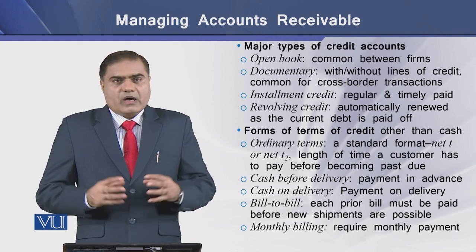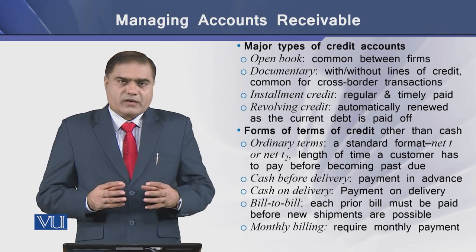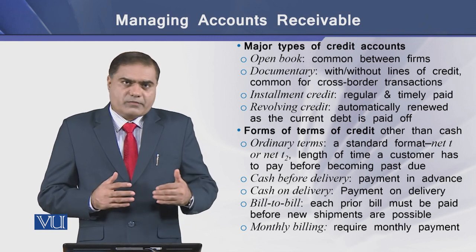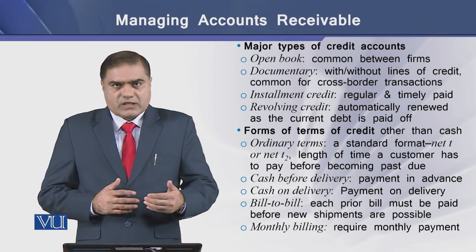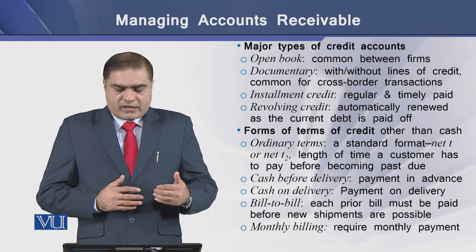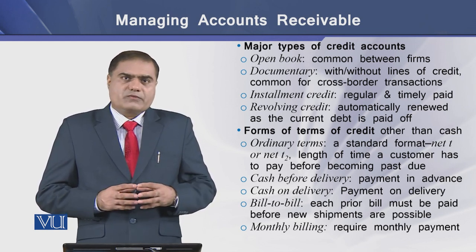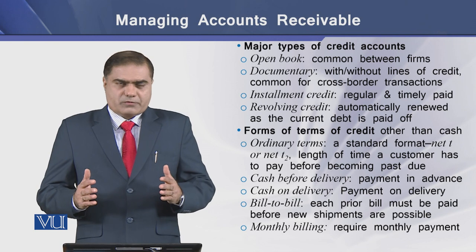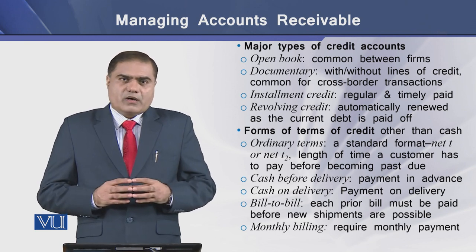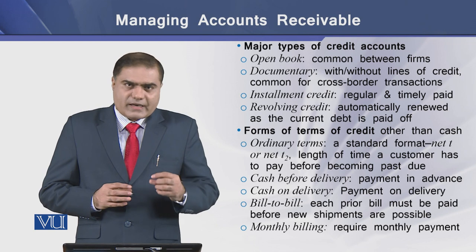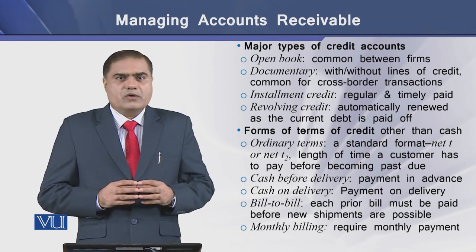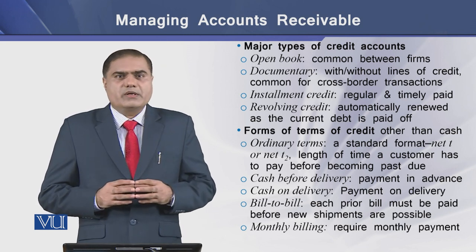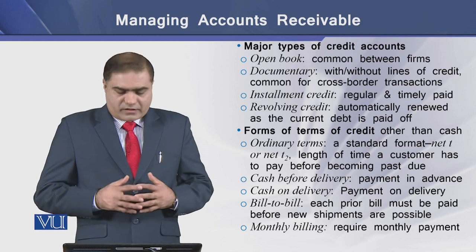The forms of credit terms other than cash include ordinary terms, which can be written as net-T or net-T2, for example 2/10 net 30. This means that if you pay within the first 10 days of the credit period, you are offered a 2% discount. If you forego the discount period, you must pay the full amount by the 30th day.